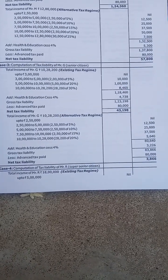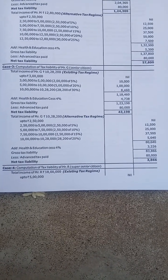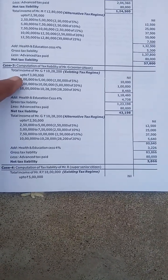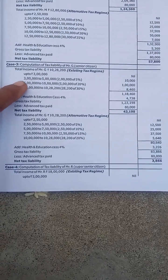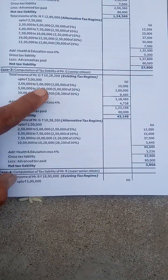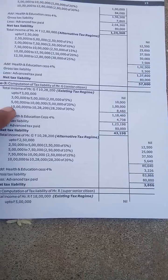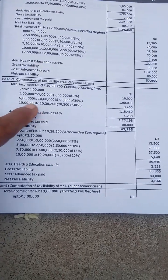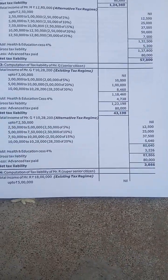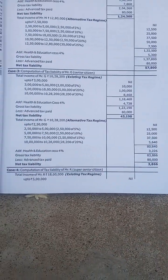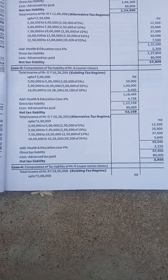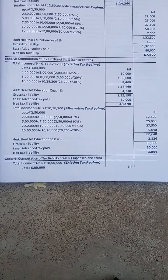The tax slabs are: up to 3 lakhs, then 3 to 5 lakhs, then 5 to 10 lakhs at a higher rate, and above 10 lakhs at 20%. Additionally, there is an education cess of 4%.